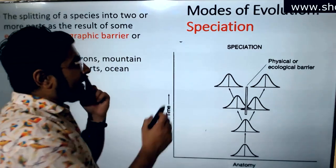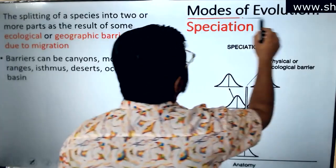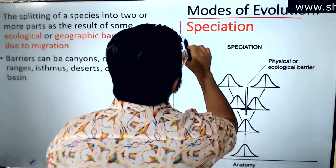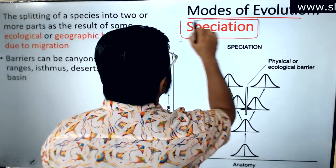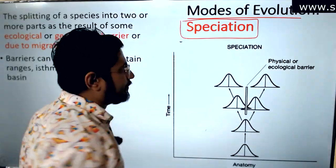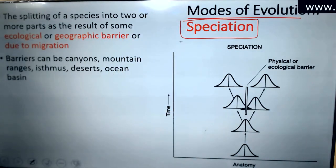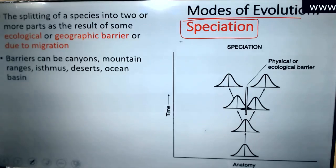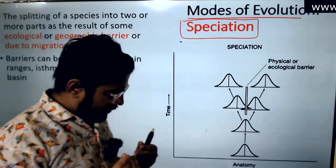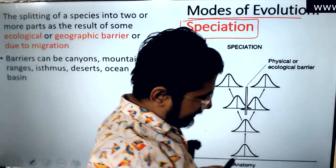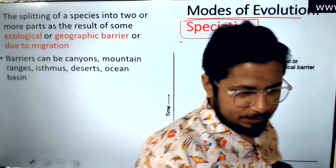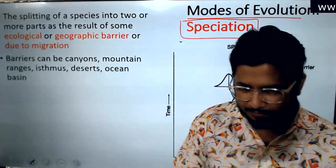What other mode of evolution is there? Speciation is another mode of evolution. What is speciation? Forming new species — from one existing species, we are forming a new species. That is speciation.